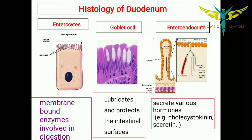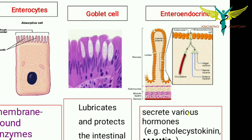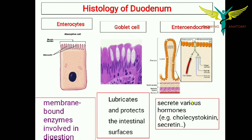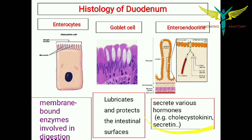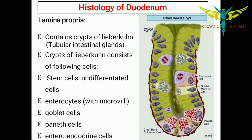The enterocytes have microvilli called the brush border, which contain membrane-bound enzymes involved in digestion. The second type of cell is the goblet cell, which helps in lubrication in the form of mucus and protects the intestinal cell surfaces from gastric juice. As the name enteroendocrine suggests, these cells secrete various hormones like cholecystokinin and secretin.